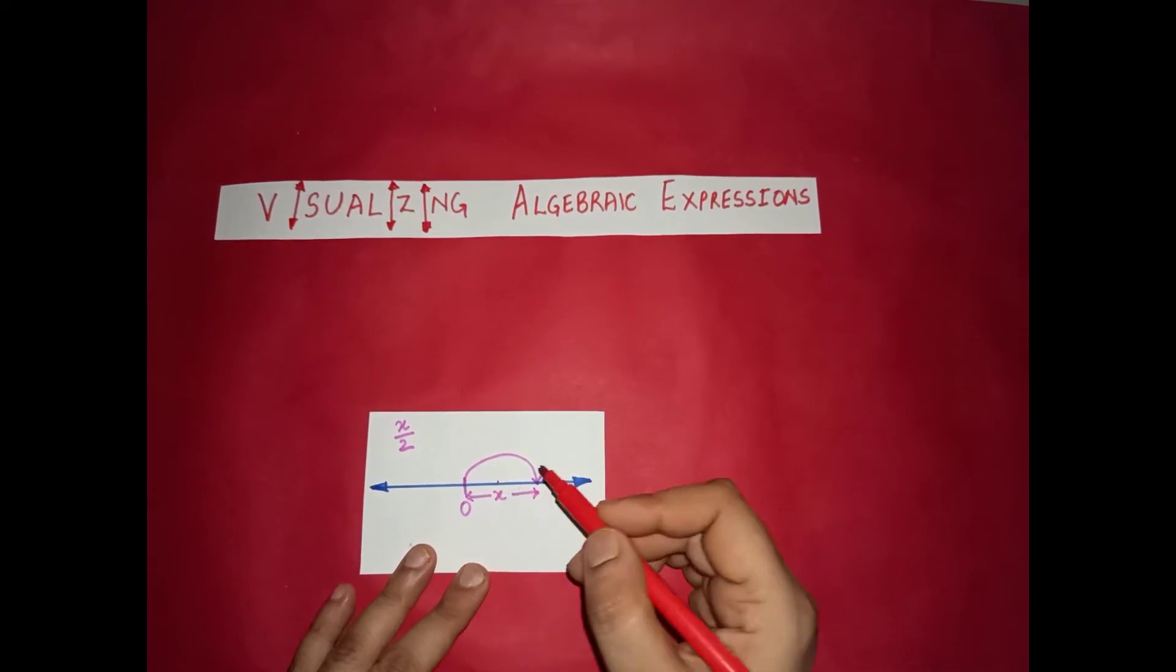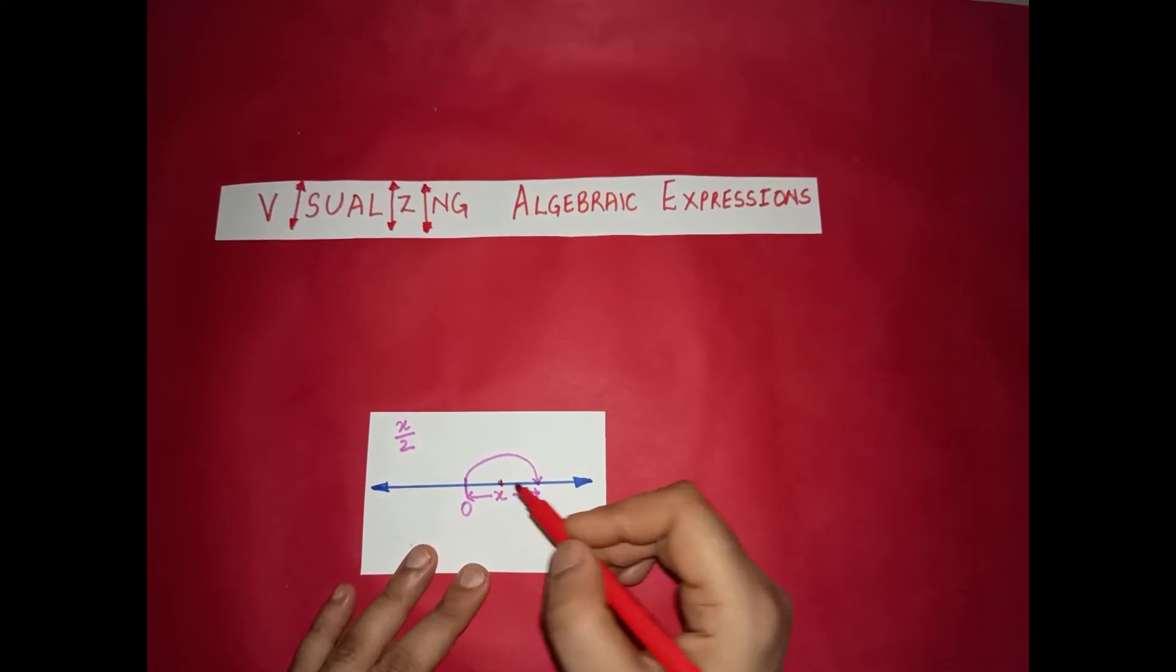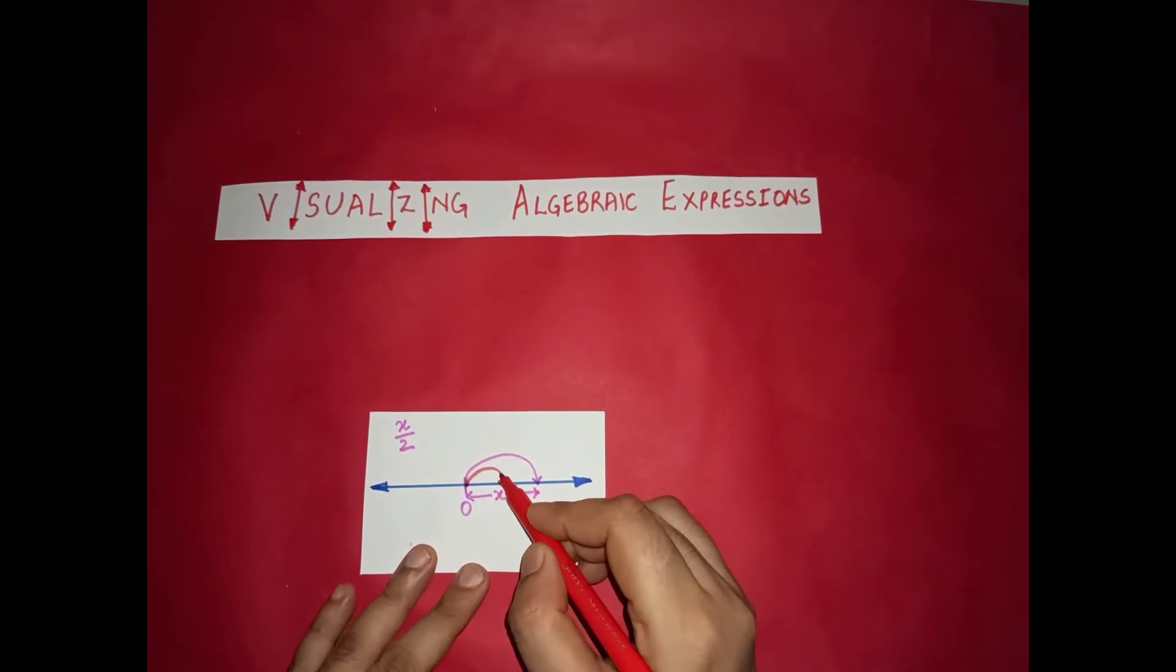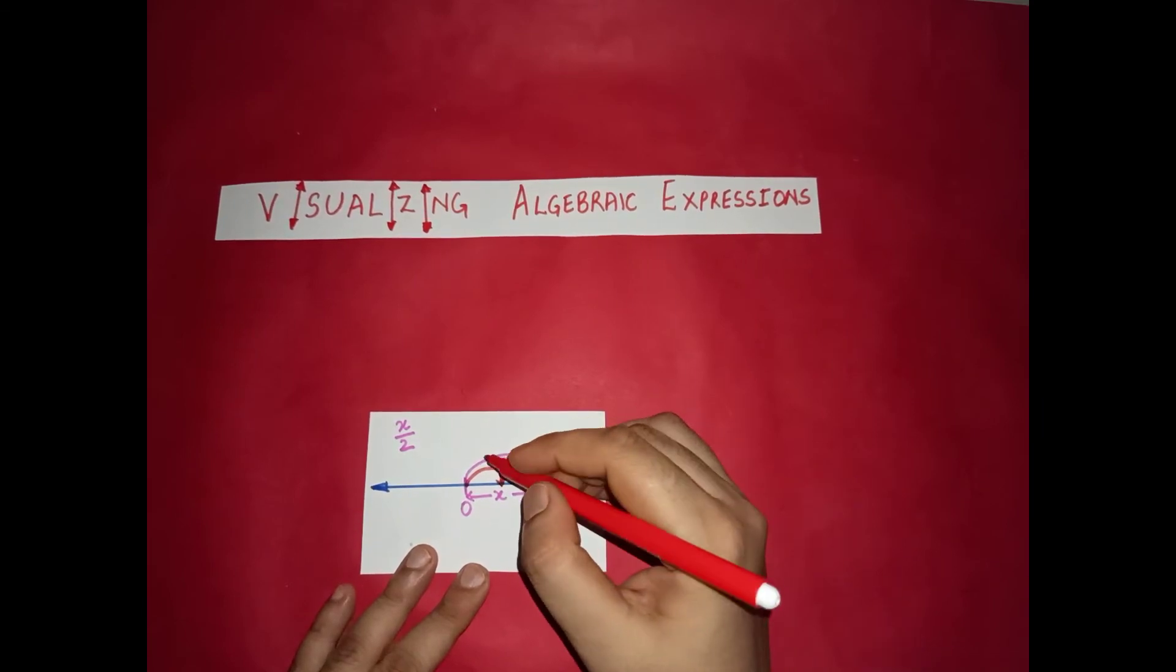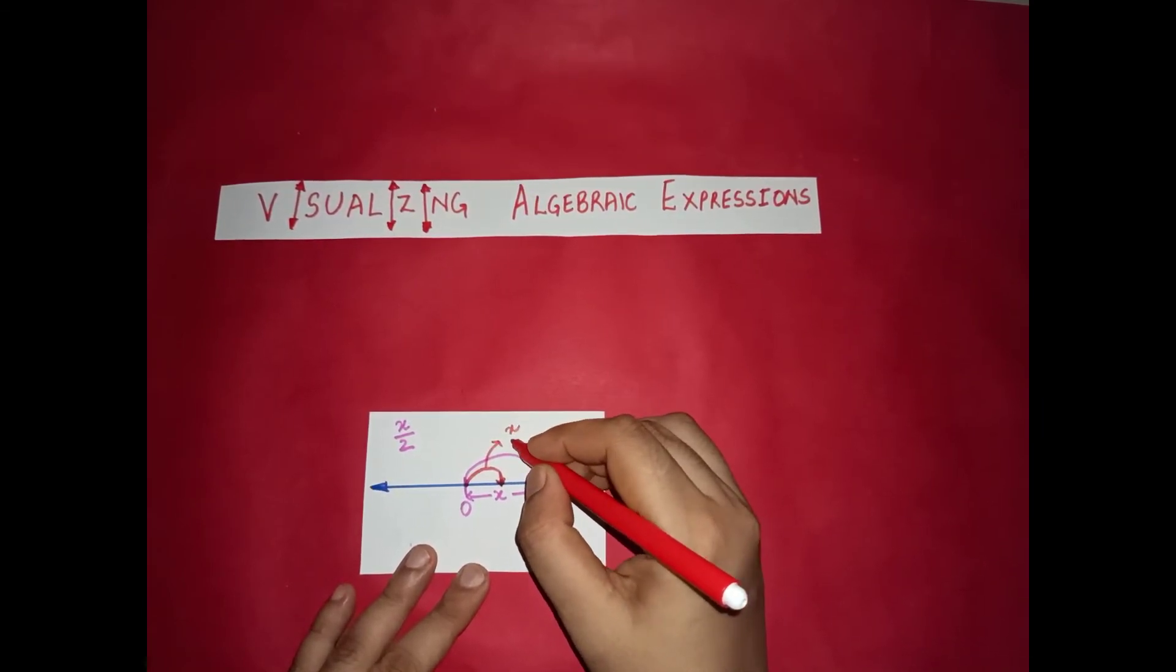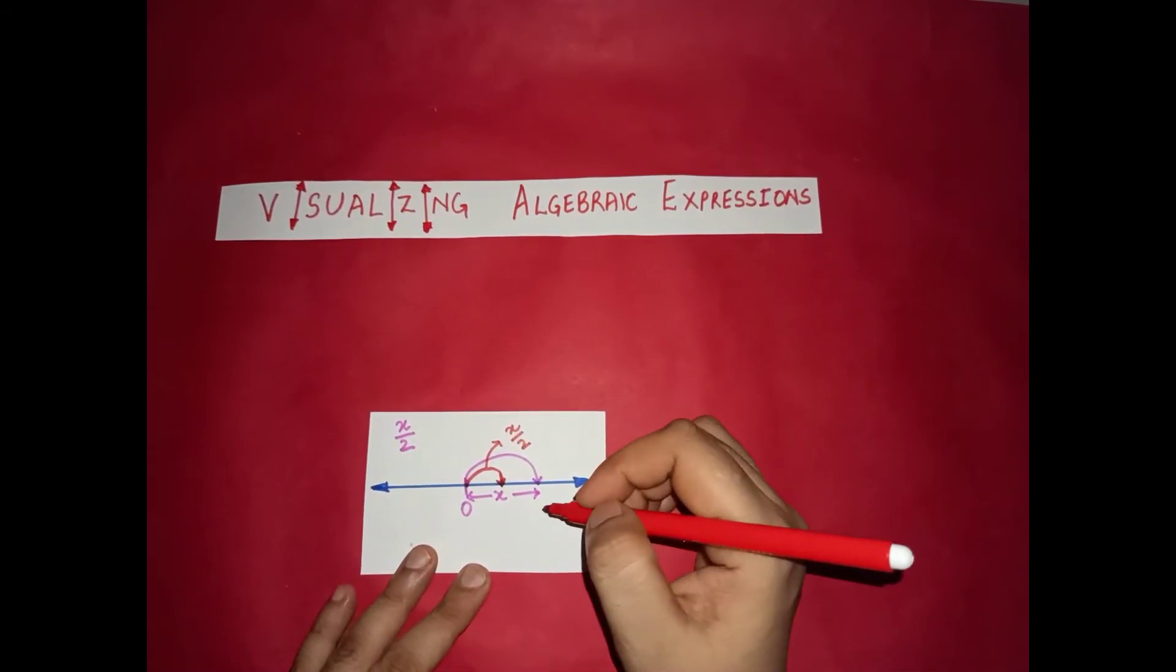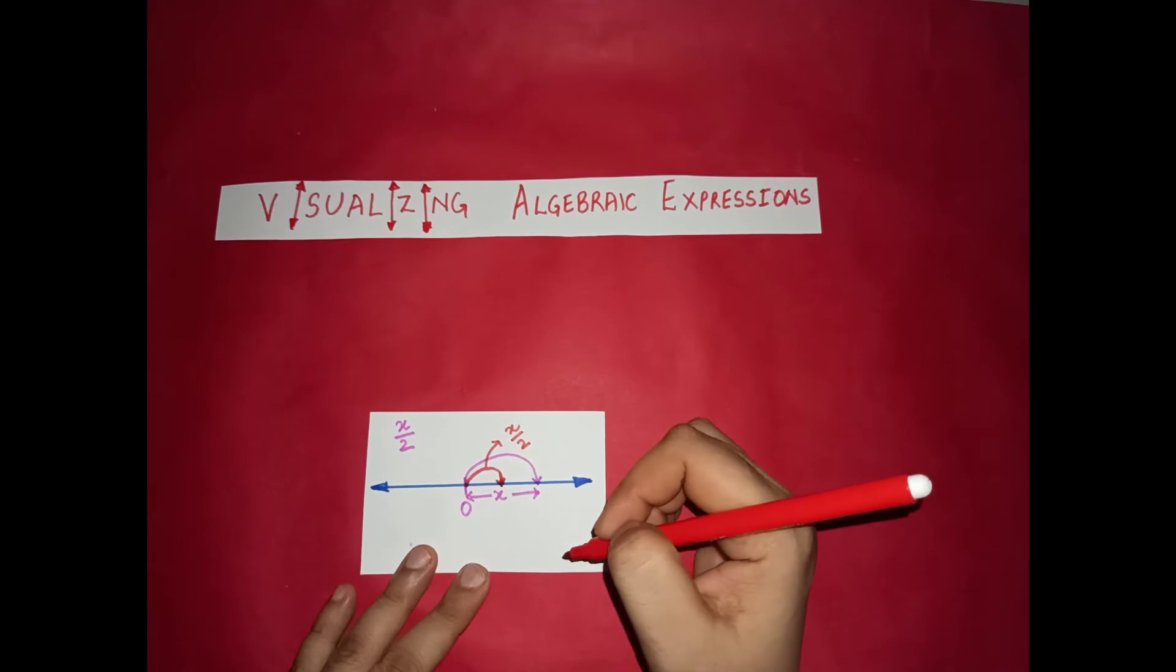So approximately this point is the half. So we need to make a jump of this much. So here the red jump is representing x by 2. So this is the visualization of x by 2.